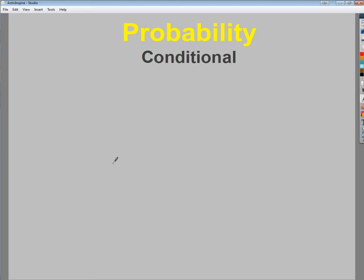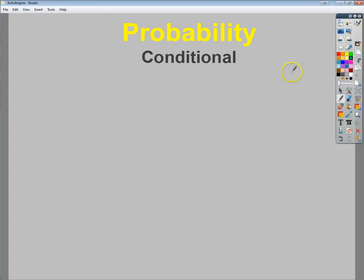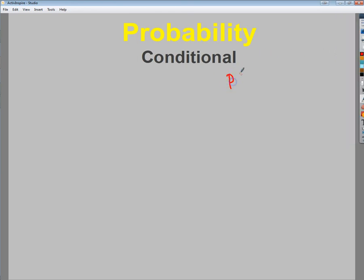Conditional probability is how likely something is if you already have another assumption in place. So I may say, what's the probability of you choosing this or this happening if this has already happened?